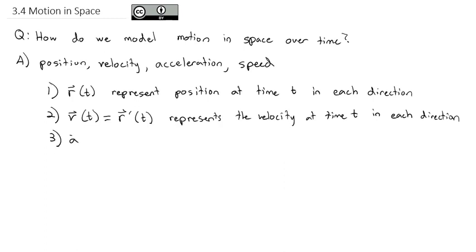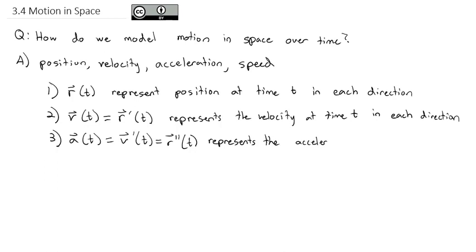As you might expect, the acceleration vector a(t) is the derivative of the velocity vector, or the second derivative of the position vector, representing the acceleration at time t in each direction.